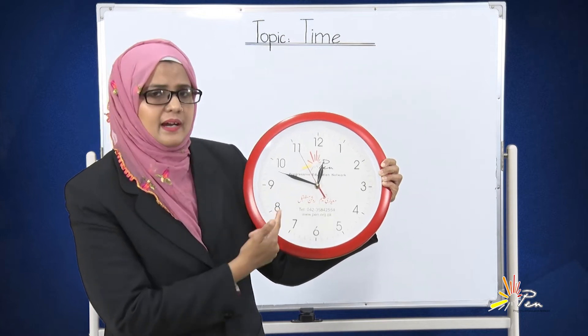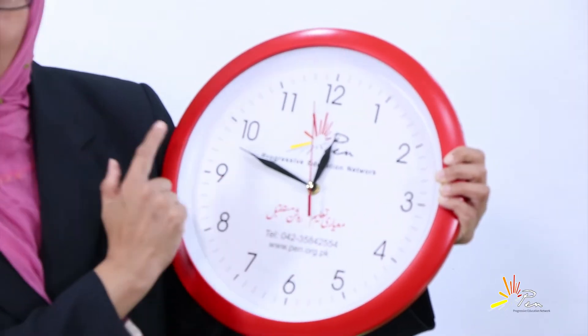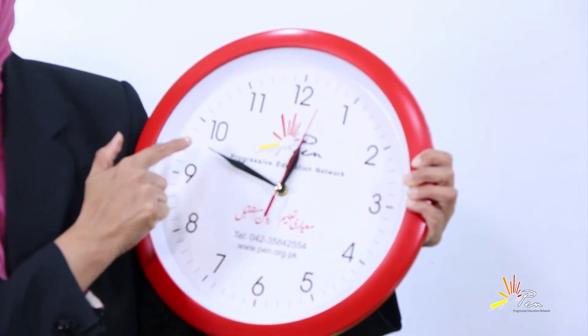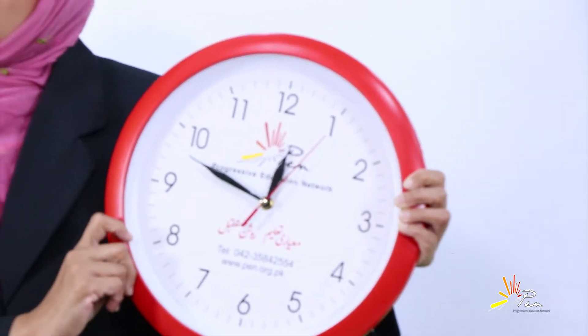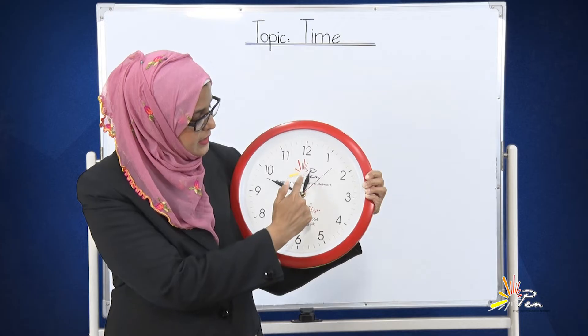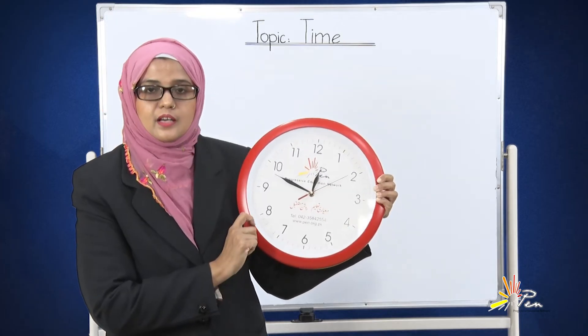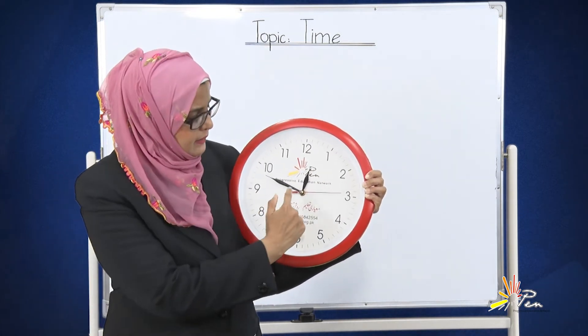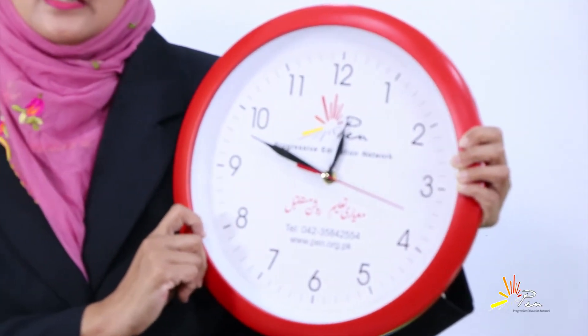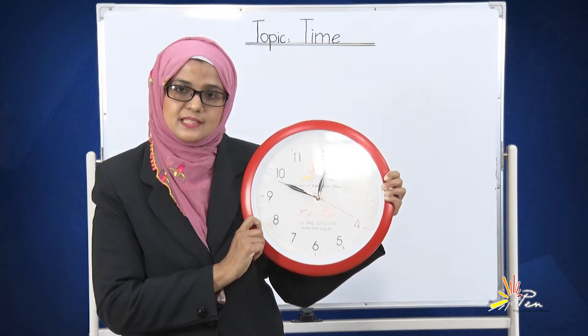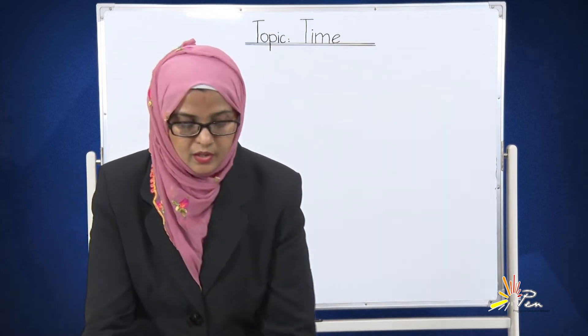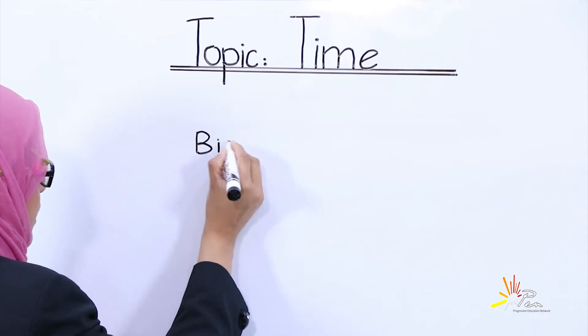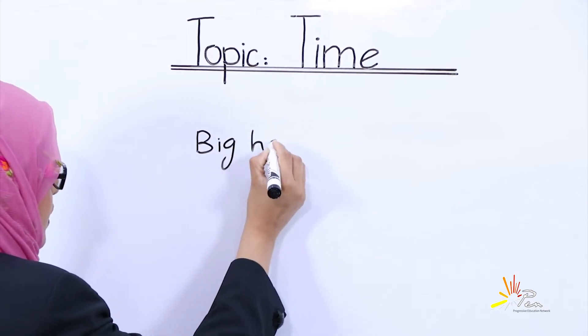You can see that there are some hands in this clock. Observe this hand. This is a big hand. The big hand tells us the minutes. And this is the small hand. The small hand tells us about the hours.